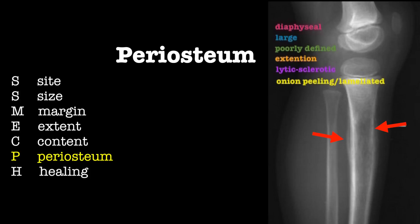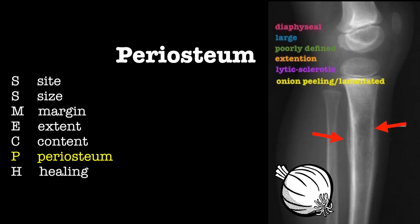Here you can appreciate the periosteal reaction and its onion peeling appearance, suggesting a more malignant or aggressive lesion.